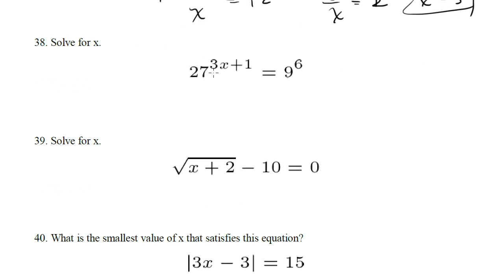Solve for x. Here we have an exponent equation. First let's get these in terms of the same base. So 27 is the same thing as 3 to the 3. So this is 3 to the 3 times 3 to the 3x plus 1. 9 is the same thing as 3 squared, so that's 3 squared to the 6.